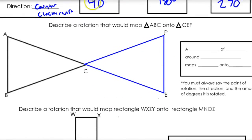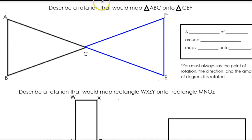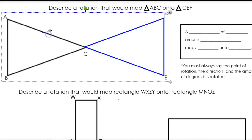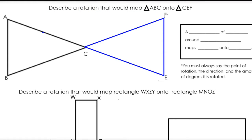Let's start off with the off-the-grid. We want to describe a rotation that maps triangle ABC onto CEF. We're going to rotate this around so it maps over CEF. The way we're going to do that is figure out what the center of rotation is — that's our first concern. The center of rotation is C.